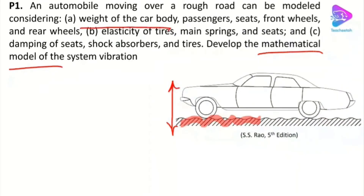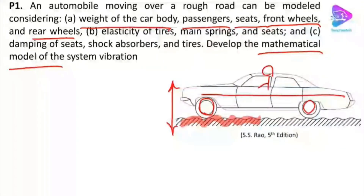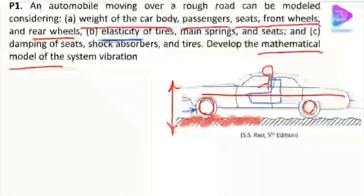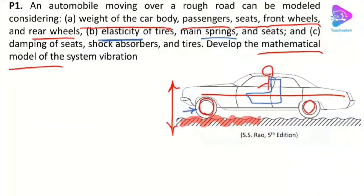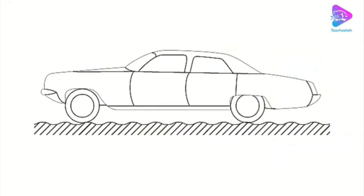The problem asks us to find the mathematical model for the car, considering the weight of the car body, passenger seats, front wheels, and rear wheels. We also need to consider the elasticity or springness of the tires, seats, and main suspension system springs, as well as the damping from shock absorbers and tires. Considering all these components, let's find the mathematical model.